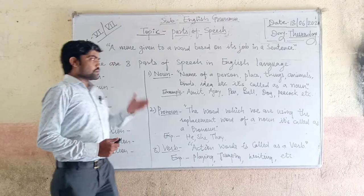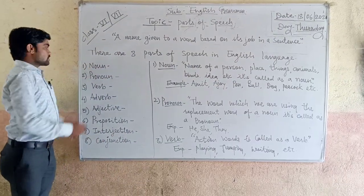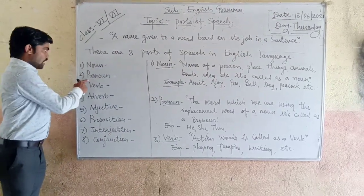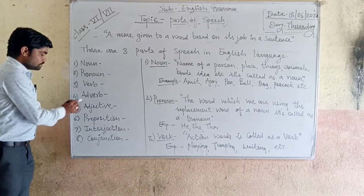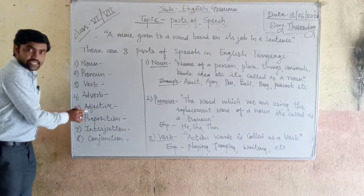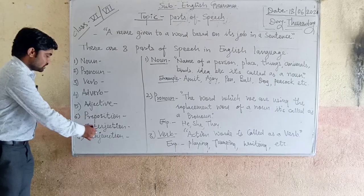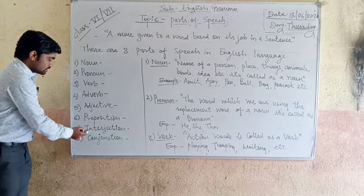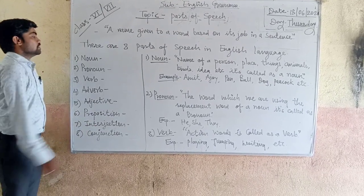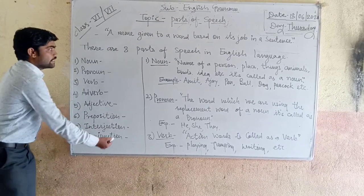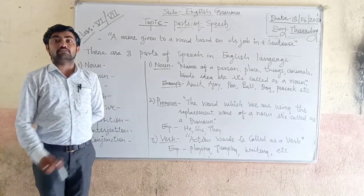First is the noun, second pronoun, third verb, fourth adverb, fifth adjective, sixth preposition, seventh interjection, and eighth conjunction. These are the 8 parts of speech in English grammar.